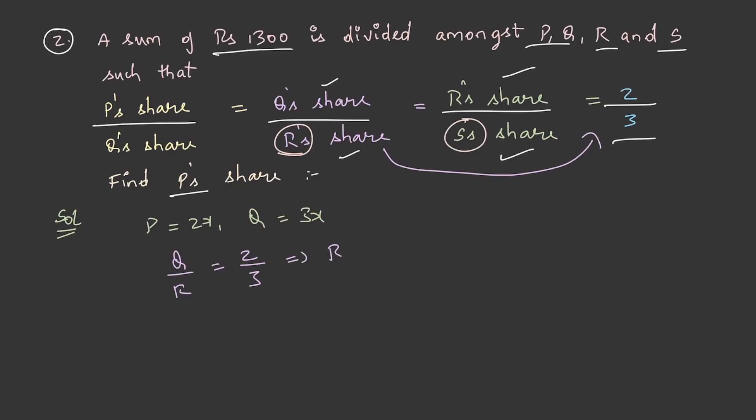I have written it from the question here. From this, we can write R as 3 by 2 Q. As we have taken Q as 3x, the value of R becomes 9x by 2. Similarly, R by S is equal to 2 by 3. From the question, S can be written as 3 by 2 R and we know that R is equal to 9x by 2. Therefore, S value becomes 27x by 4.